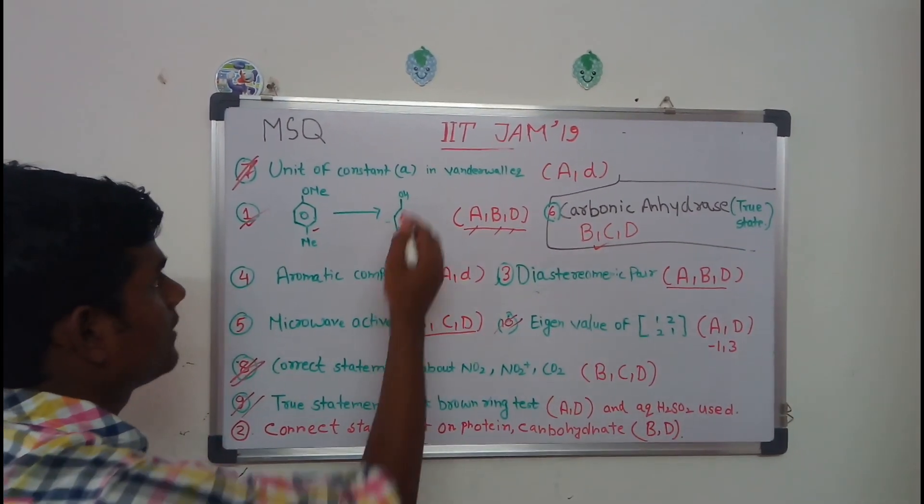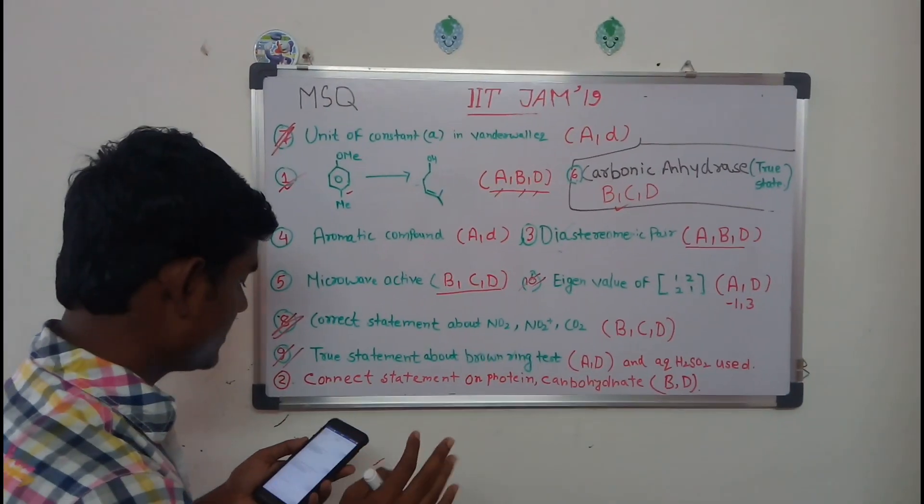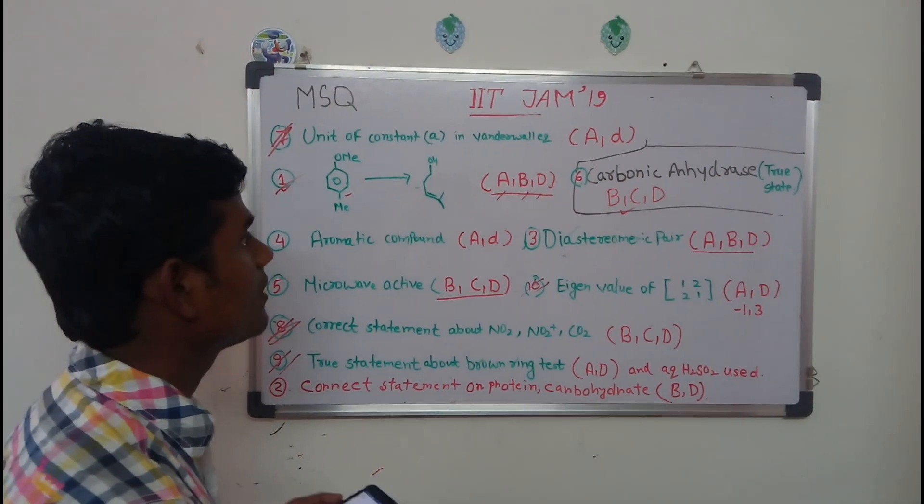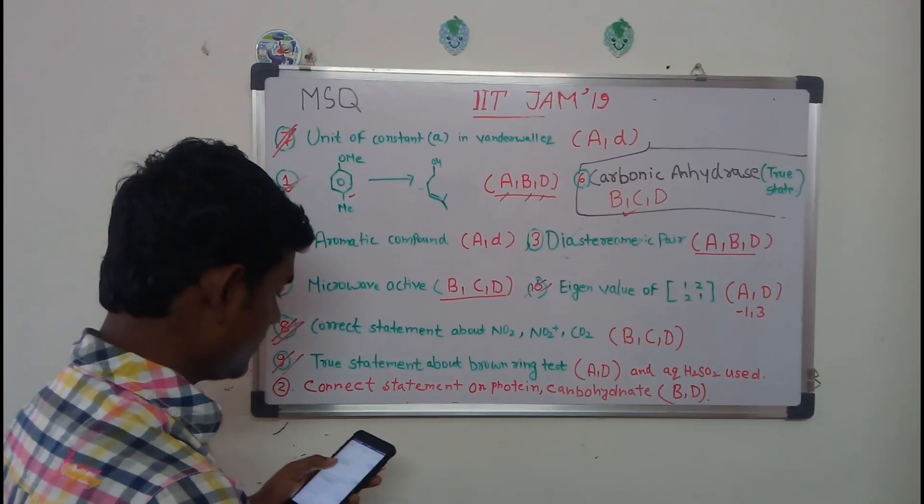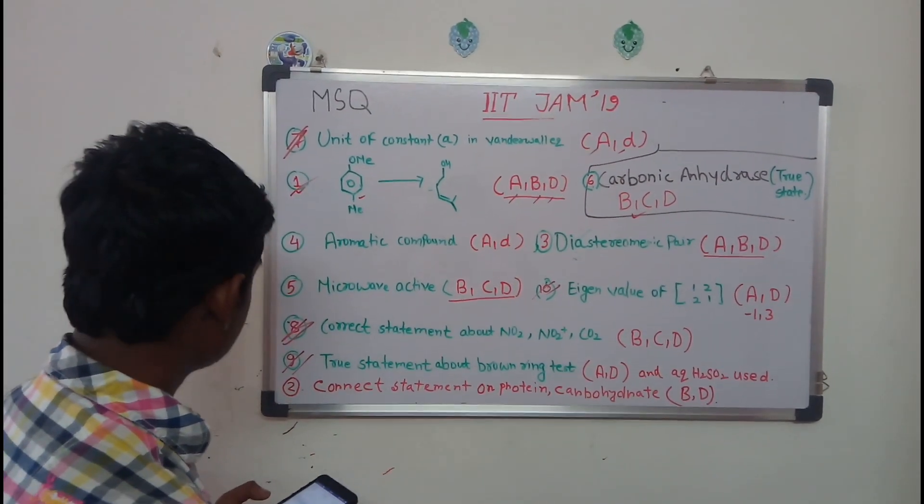So the next question - they have asked about van der Waals constant A and its unit. It's pretty easy. There are four units. If you just see our video about unit conversion, you will easily find out that option A and D are the correct ones. Stay with us.